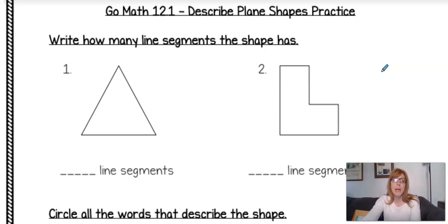Alright so it says how many line segments does the shape have? So you want to remember a line segment starts right here and it goes all the way down to the end. Line segments connect and they form angles. Okay so you want to count how many line segments there are.